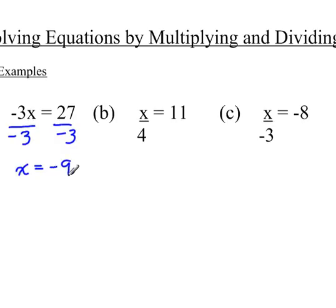In letter B, this says x divided by 4. So you get rid of dividing by 4 by multiplying both sides by 4. And your answer is 44.